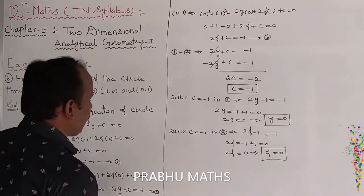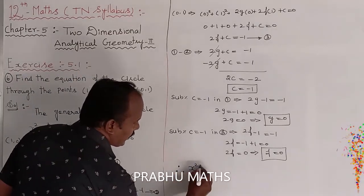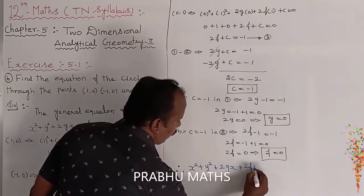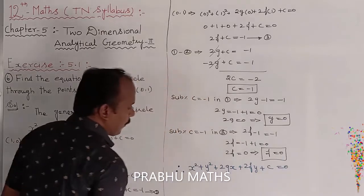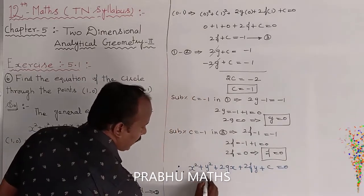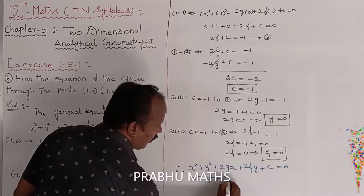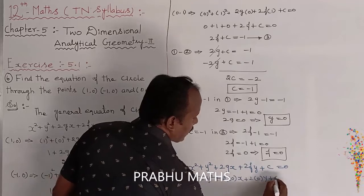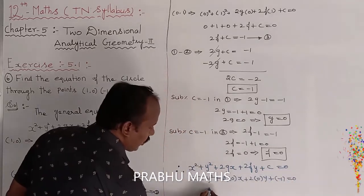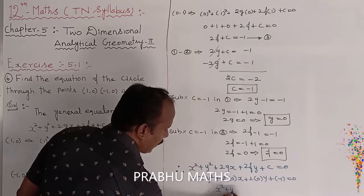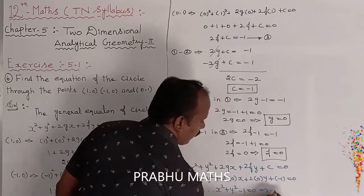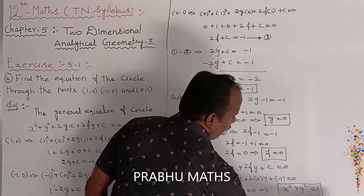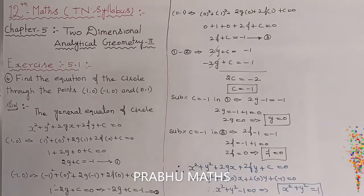Therefore the general equation of the circle is X squared plus Y squared plus 2G·X plus 2F·Y plus C equals 0. Substituting G equals 0, F equals 0, and C equals minus 1: X squared plus Y squared plus 0 plus 0 minus 1 equals 0, which gives X squared plus Y squared equals 1. This is the solution.